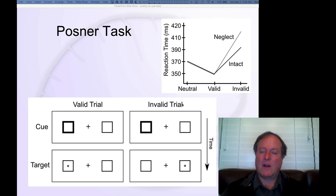You have two different types of trials, a validly cued trial and an invalidly cued trial. And the validly cued trials are typically about 80% of the trials so that's what people learn to sort of trust the cue.